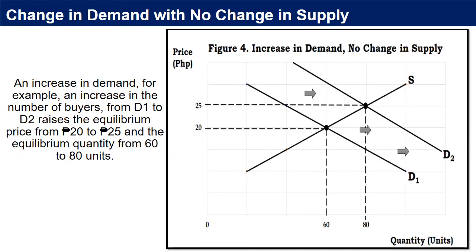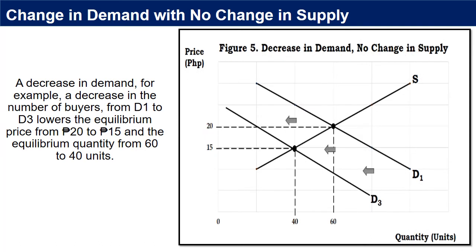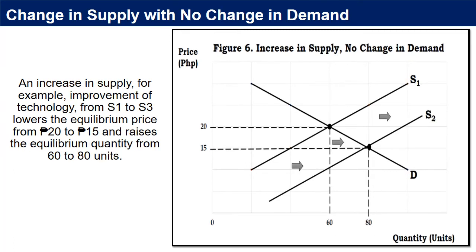Effects of changes in demand and supply: An increase in demand — for example, an increase in the number of buyers from D1 to D2 — raises the equilibrium price from 20 pesos to 25 pesos and the equilibrium quantity from 60 to 50 units. A decrease in demand — a decrease in buyers from D1 to D3 — lowers the equilibrium price from 20 pesos to 15 pesos and the equilibrium quantity from 60 to 40 units. An increase in supply, for example improvement of technology (S1 to S3), lowers the equilibrium price from 20 to 15 pesos and raises the equilibrium quantity from 60 to 80 units.